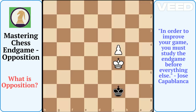First, let's define opposition. In chess endgames, opposition refers to the positioning of the kings in relation to each other. It is an essential technique for controlling the board and gaining a decisive advantage. If you are playing a king and pawn endgame, knowing how to use opposition can make the difference between a win and a draw. There are several types of opposition and understanding each can significantly impact your endgame performance.